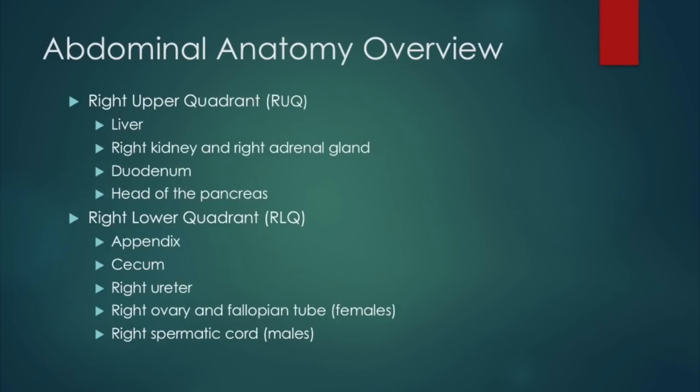Just some abdominal anatomy overview. Within the right upper quadrant, we have the liver, the right kidney, the right adrenal gland, the duodenum, and the head of the pancreas. Within the right lower quadrant, we have the appendix, cecum, the right ureter, the right ovary and fallopian tube for females, and the right spermatic cord for males.